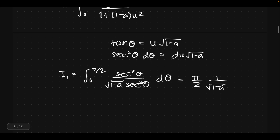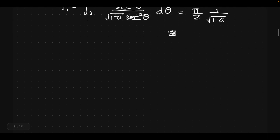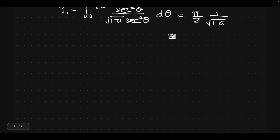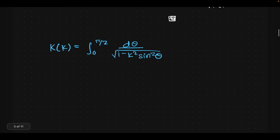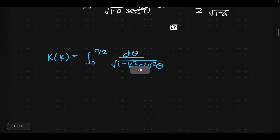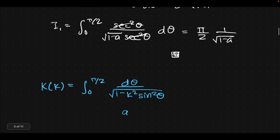That was the lemma, so we've proved it successfully. Now we have to apply it — applying it is always the hardest thing, to see where we can use the result. For the complete elliptic integral of the first kind, our a, compared to the form we had before, is just k²·sin²θ.